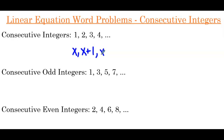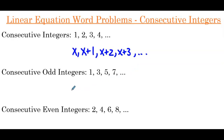And following that pattern we'd have x plus 2, x plus 3, and so on. How far we go depends on what the word problem indicates. Now let's say the word problem tells us that we have consecutive odd integers. An example of that would be the string 1, 3, 5, 7, etc.